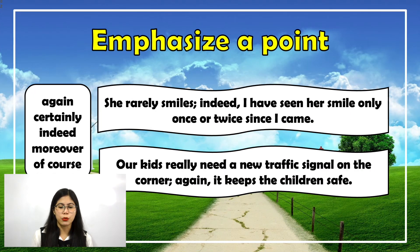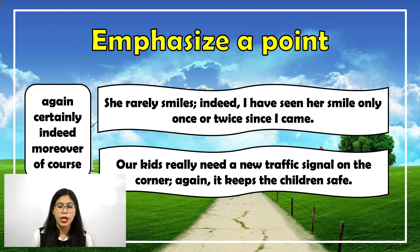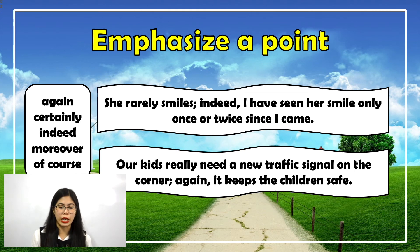The conjunctive adverb should be used when you want to emphasize a point: again, certainly, indeed, moreover, of course, etc. Example: 'She rarely smiles; indeed, I have seen her smile only once or twice since I came.' This emphasizes that the person being talked about rarely smiles freely. Another example: 'Our kids really need a new traffic signal on the corner; again, it gives the children safety.' This also emphasizes the necessity of having a traffic signal.